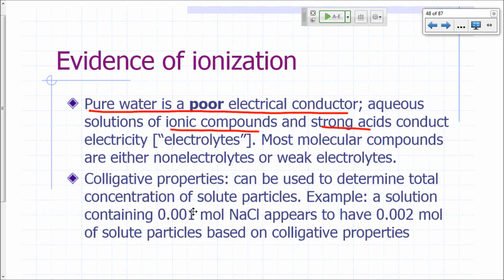Another evidence of ionization is what are called colligative properties. We can use these to determine the total concentration of solute particles. For example, if you have a solution with 0.001 moles of sodium chloride, when we measure colligative properties in the lab, it will appear to have 0.002 moles of solute particles—twice as many. That's evidence that each sodium chloride split into two particles in solution—so that's another evidence of ionization.